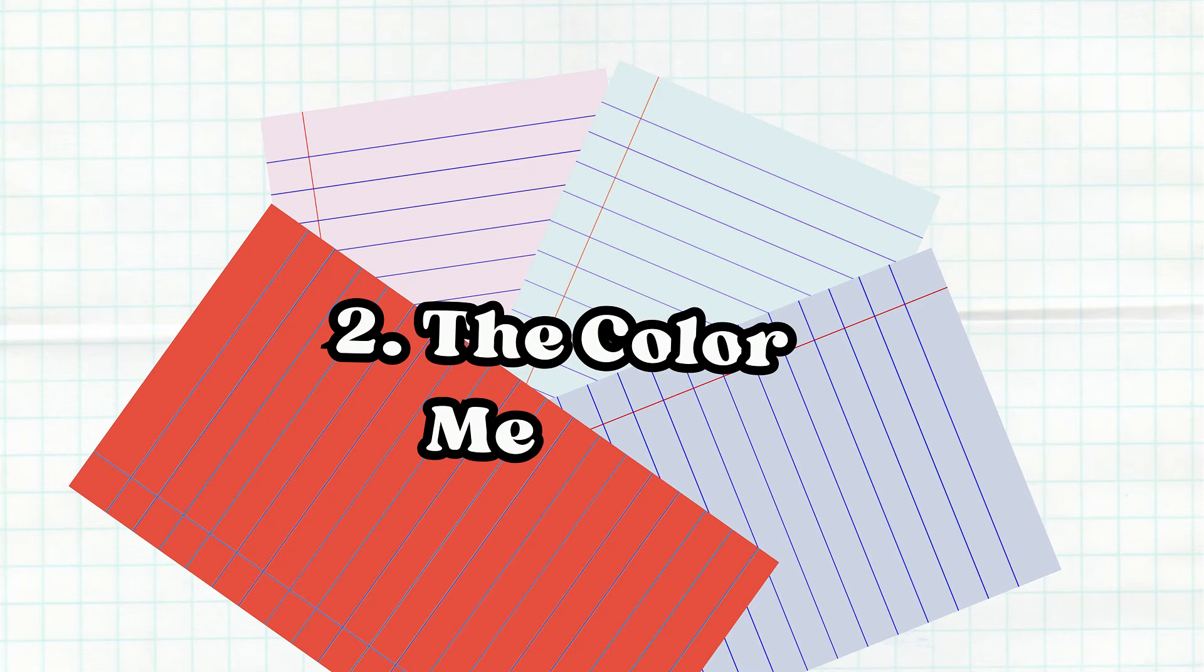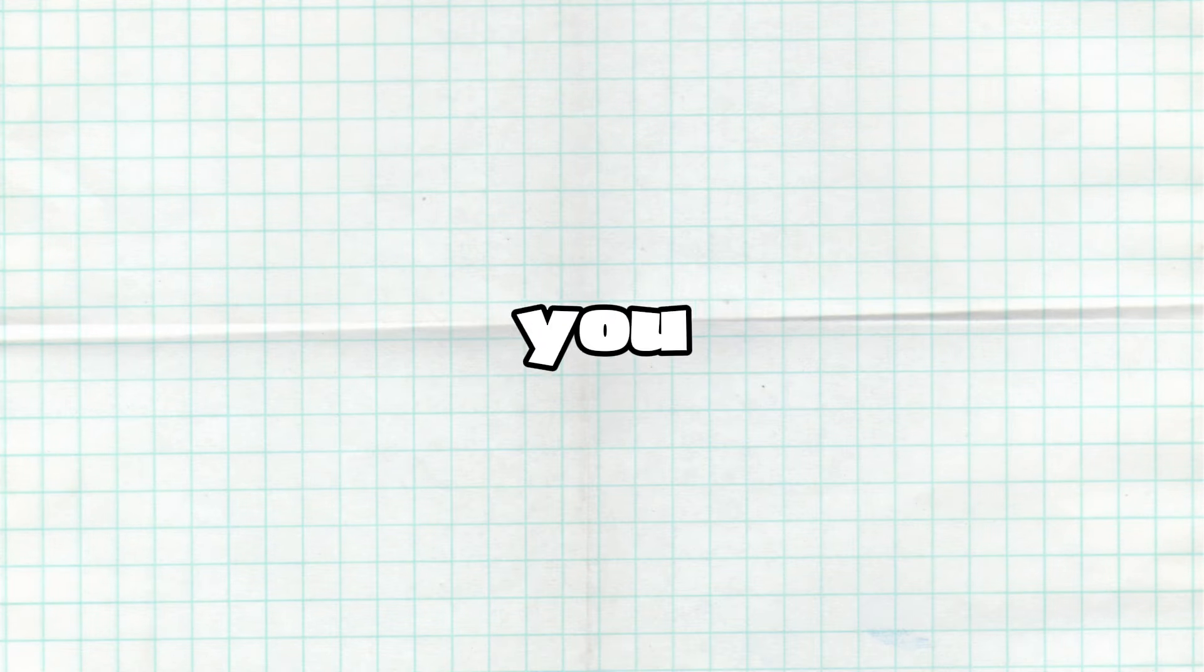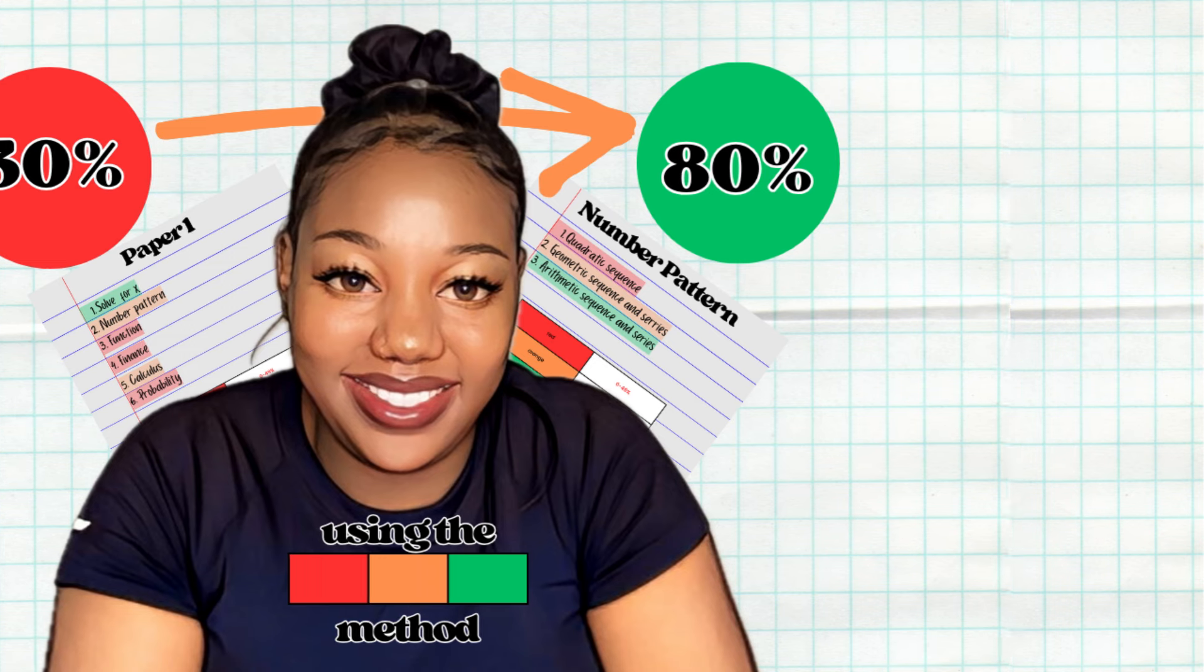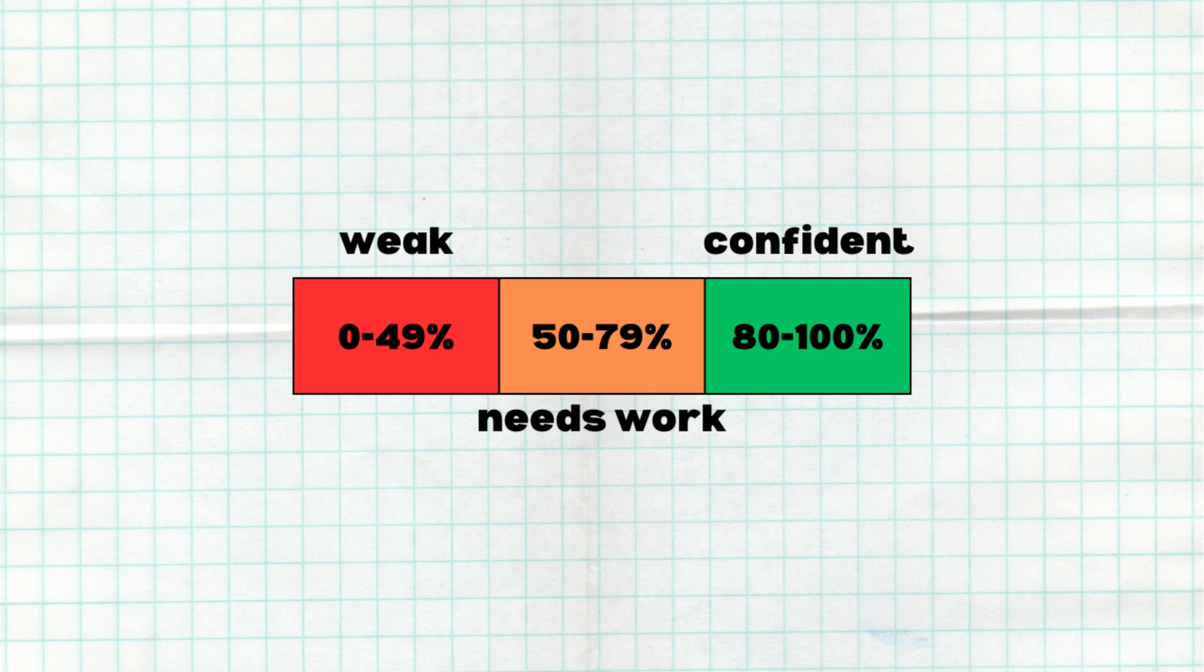Step 2: The color method. Now that you know your score for each section, we're going to apply the color method, one of my favorite techniques. I have a full video on this, which I'll link in the description, but here's a quick summary. The color method groups topics into three categories.